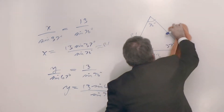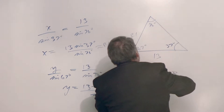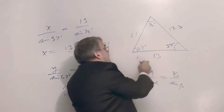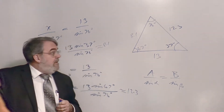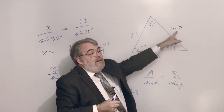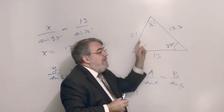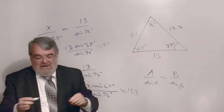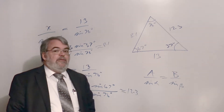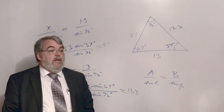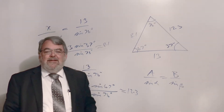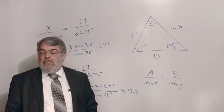Does that make sense? The largest angle is 76 degrees, so 13 should be the longest side. The next largest angle is 67, so 12.3 should be the second largest. And 8.1 should be the shortest side opposite the smallest angle, 37 degrees. That's a way of checking yourself without redoing the problem. We'll work some more Law of Sines examples, then go on to the Law of Cosines.